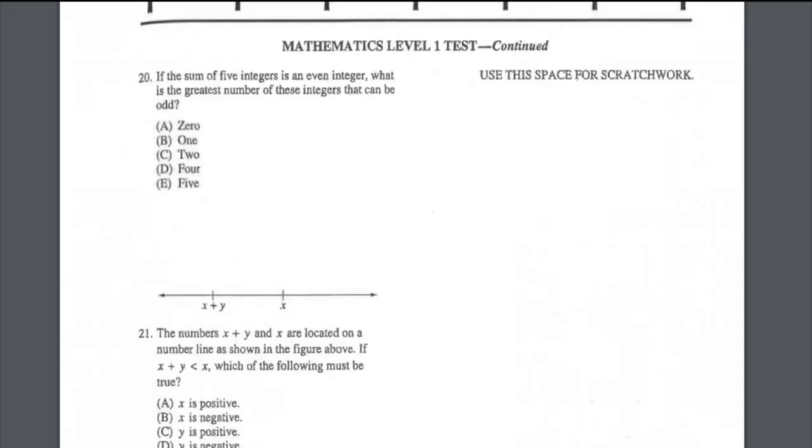Moving to question number 20: if the sum of five integers is an even integer, what is the greatest number of these integers that can be odd? The answer is five. How? By adding 5 plus 4 is 9, plus 3 is 12, plus 2 is 14, plus 1 is 15 — that is an odd number, so we can have all five be odd. Question number 21: the numbers x plus y and x are located on the number line. If x plus y is smaller than x, that means y is a negative number because going to the left decreases the values. The suitable answer is D.